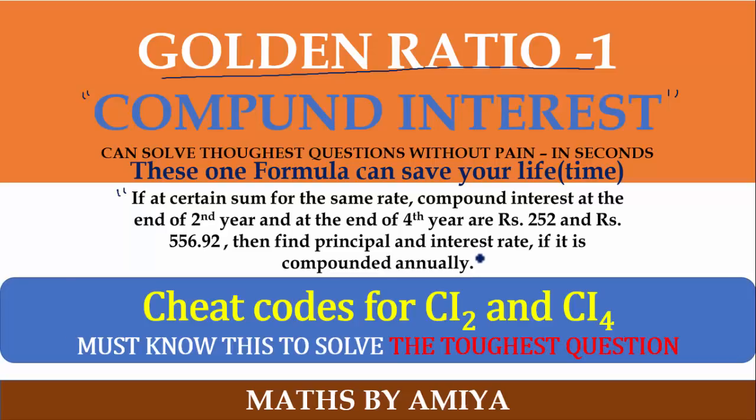This is your question and we'll try to solve this question with the help of golden ratio or golden formula in seconds or within minutes. And this you can say cheat code of CI2 and CI4, because why CI2 and CI4? You have second year and fourth year compound interest given, you have to find the principal and interest. So this is a conditional formula. If you have second year and fourth year compound interest given, then how we can find the principal and interest within seconds or minutes.